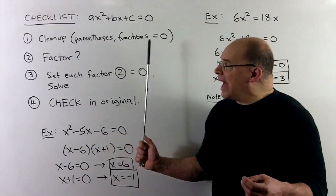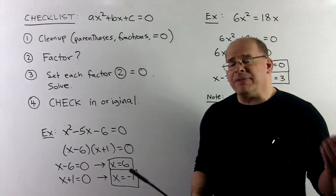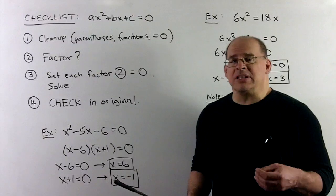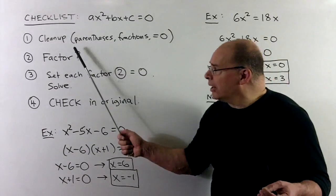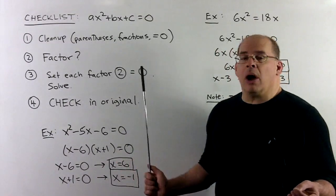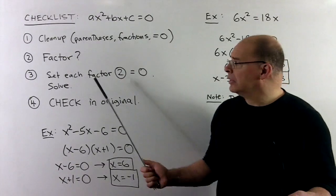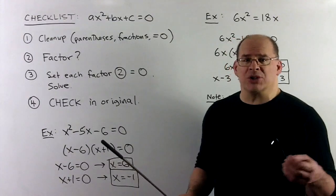Now, once we've done that, step two, we see if we can factor. If we can't factor, then our techniques are not strong enough right now. We'll come back to this later when we have the quadratic formula. If we can factor, then we're going to take each factor in step two, set them equal to zero, and then just solve for x to get our solutions.